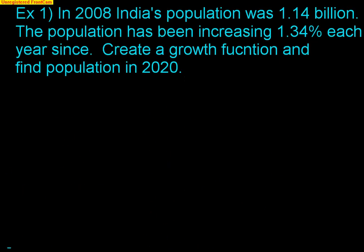In 2008, India's population was 1.14 billion. The population has been increasing by 1.34% each year since 2008. We want to create a growth function and find the population in 2020. A, the initial value, is 1.14 billion. R, the growth rate, is 1.34%, which as a decimal is 0.0134.